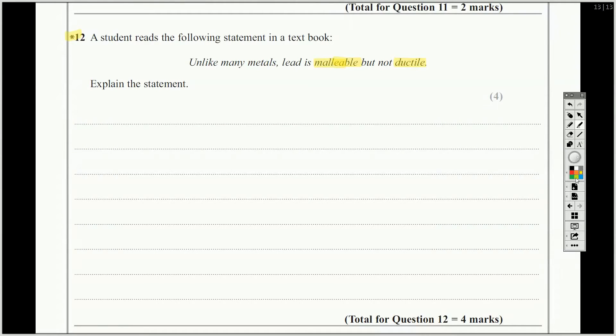So let's deconstruct this statement then. First of all, unlike many metals, we're asked just to explain this. So the first point I'm going to make seems really simple, but the first point is just most metals or many metals are both malleable and ductile. You could obviously say the converse, non-metals are not malleable or ductile. I don't really think that's the type of thing you would say in this type of question. Then let's talk about lead itself then.